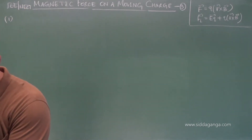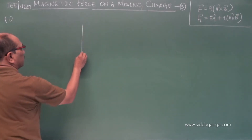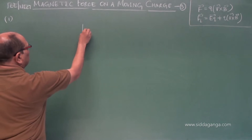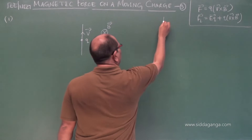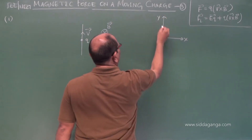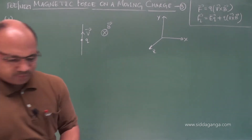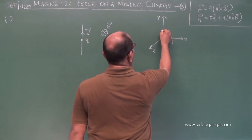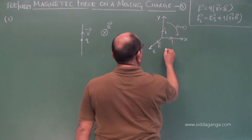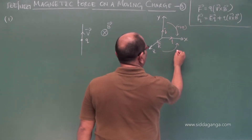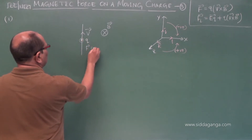Let us take the first question: find the instantaneous direction of the force in the following case. We are given a charge Q moving in a certain direction. The magnetic field is given perpendicular to the board. The direction is usually assumed as X, Y, and Z. This represents I, this unit vector is J, and this is K. If the product is taken clockwise, a negative value comes; if taken anticlockwise, it will be positive. Keeping this in mind, we can easily find the direction of the force.